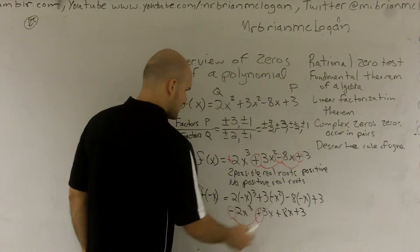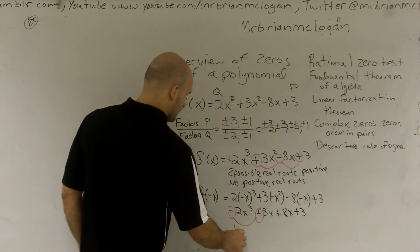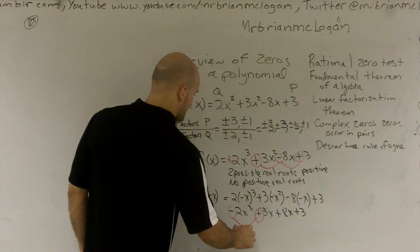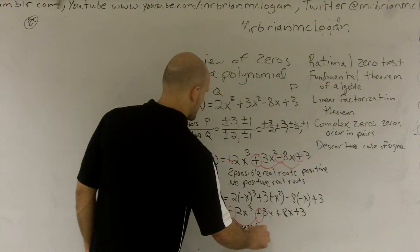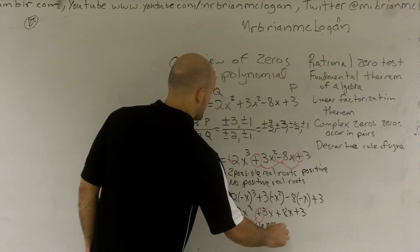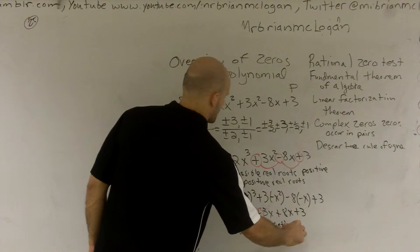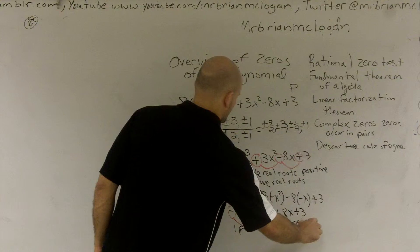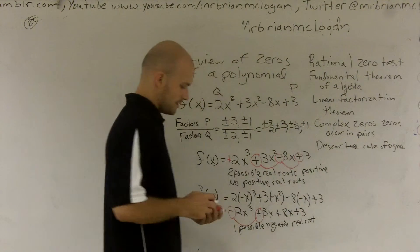So for here, I'm going to end up getting -2x³ + 3x² + 8x + 3. And so now my change of signs is going to be 1.